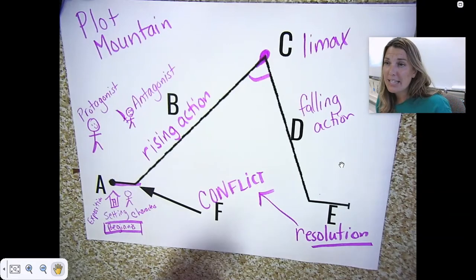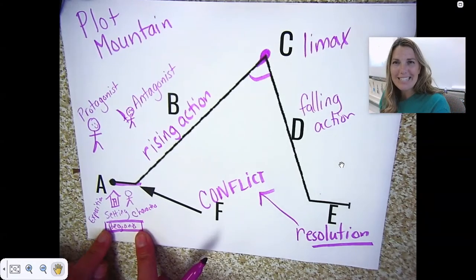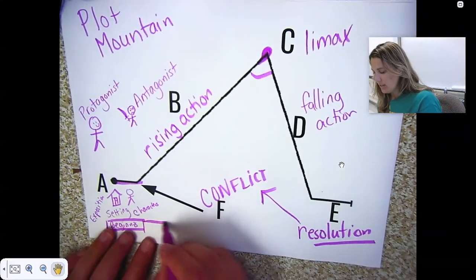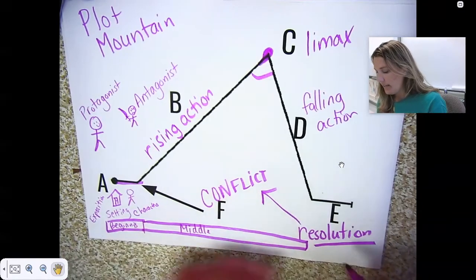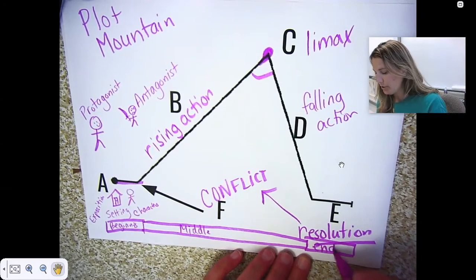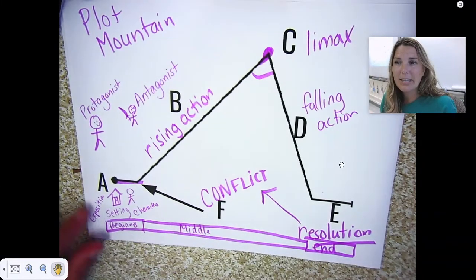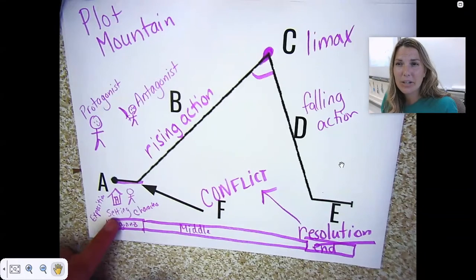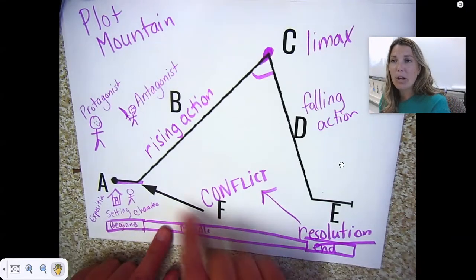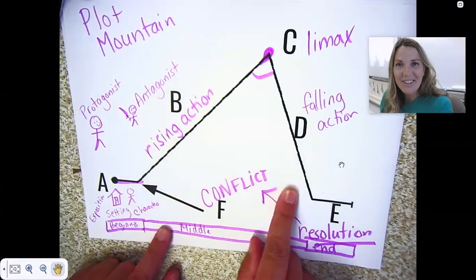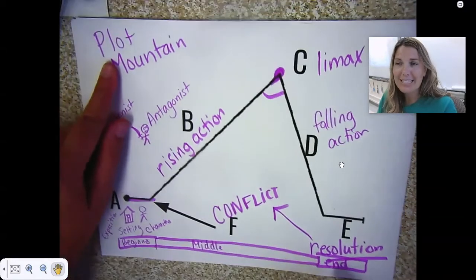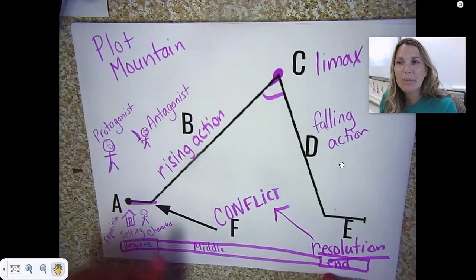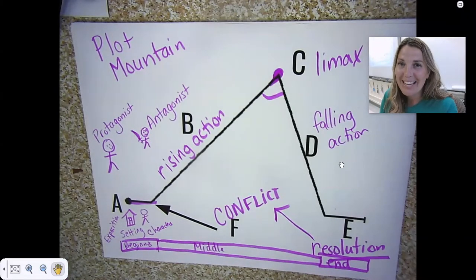This is essentially plot mountain. The beginning is the exposition. Then the middle — look how long that middle is — covers the rising action, the climax, and the falling action. Then the end is the resolution. So plot is a sequence of events from the beginning, middle, and end of the story. I hope this review helps. Bye!